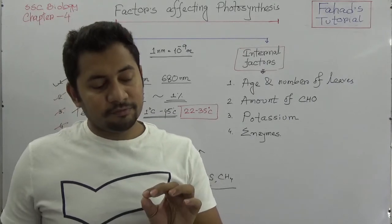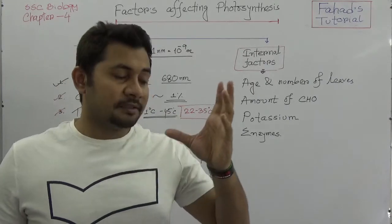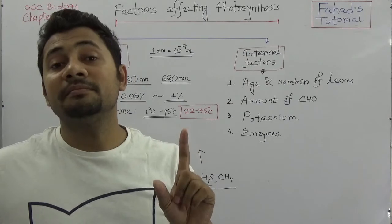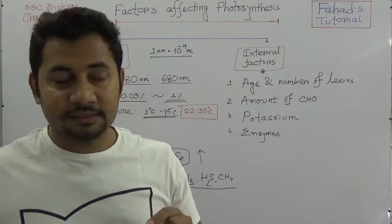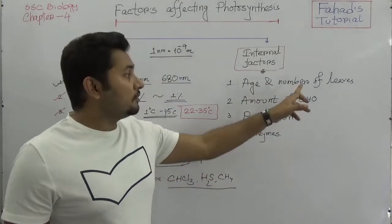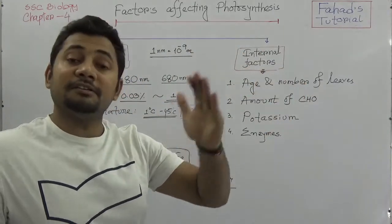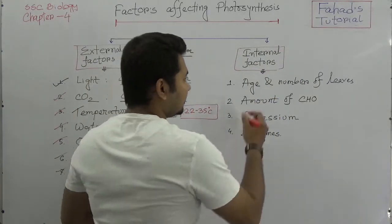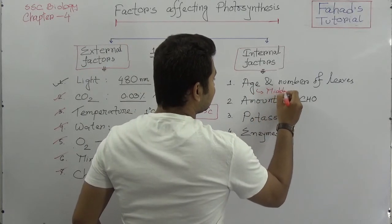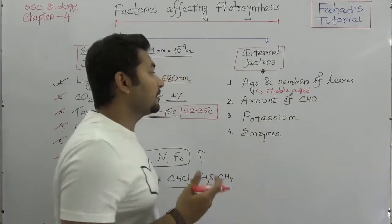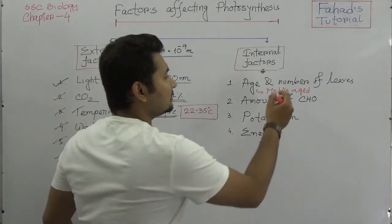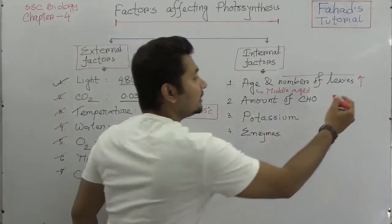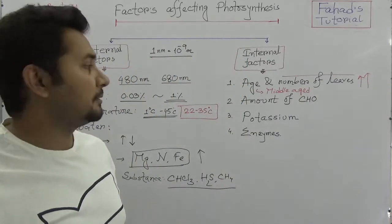Now for the internal factors. The number of chlorophyll is less in young leaves and old leaves — middle-aged leaves have the greatest number of chlorophyll. If the number of leaves is higher, the rate of photosynthesis is also higher. So middle-aged leaves will have a higher rate of photosynthesis, and more leaves means more chlorophyll and therefore a higher rate of photosynthesis.